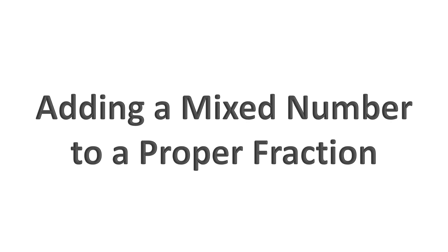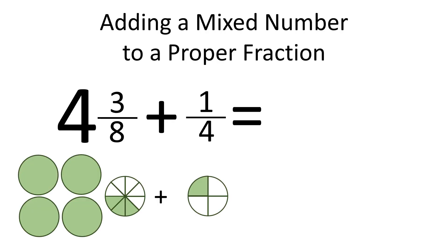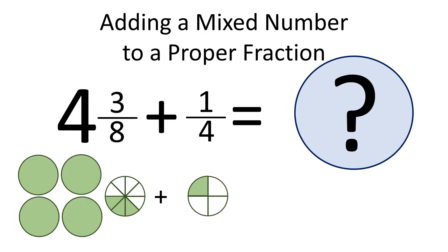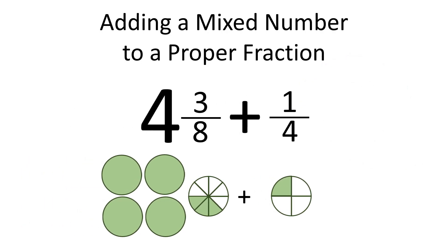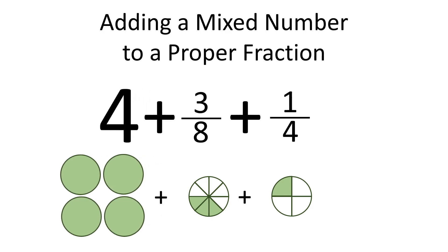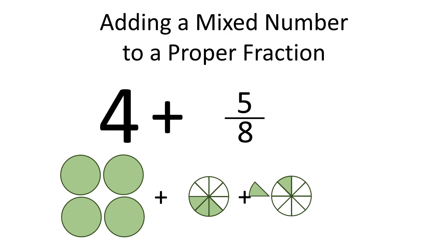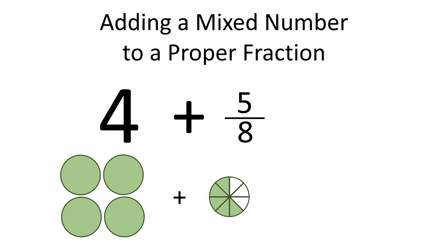Now let's talk about adding a mixed number to a proper fraction. We can rewrite 4 and 3 eighths as 4 plus 3 eighths. That way, we have 4 plus 3 eighths plus 1 fourth. We add the fractions 3 eighths and 1 fourth first, and then add that sum to 4. The common denominator for 3 eighths and 1 fourth is 8, so we have 4 plus 3 eighths plus 2 eighths. 3 eighths plus 2 eighths is 5 eighths, and 4 plus 5 eighths is equal to 4 and 5 eighths.